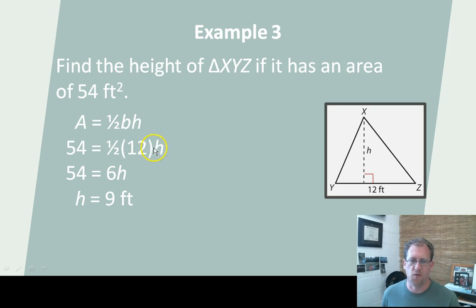So one half times 12 times h, 6 times h equals 54, divide both sides by 6, and h equals 9 feet. So the height here is 9 feet. This is just a demonstration that you can use this formula frontwards or backwards.